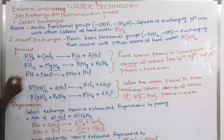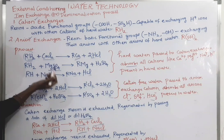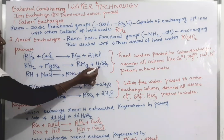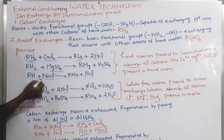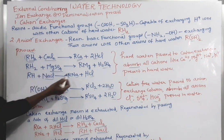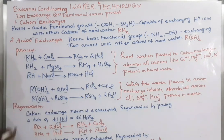Similarly, RH2 plus magnesium sulphate — the sulphates of magnesium present in the hard water — gives R·Mg plus sulphuric acid. And RH2 plus sodium chloride, which is the salt present in the water, gives R·Na plus HCl.